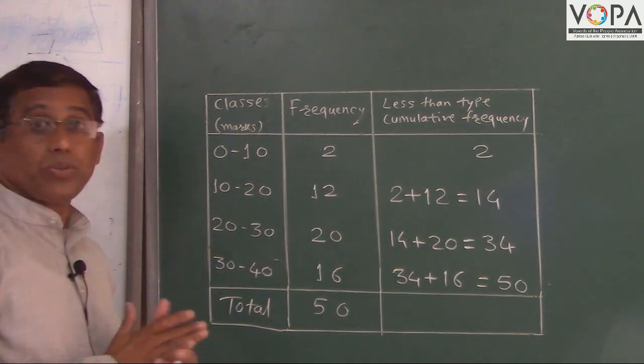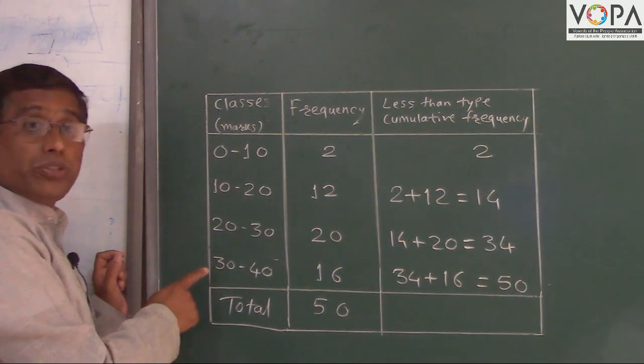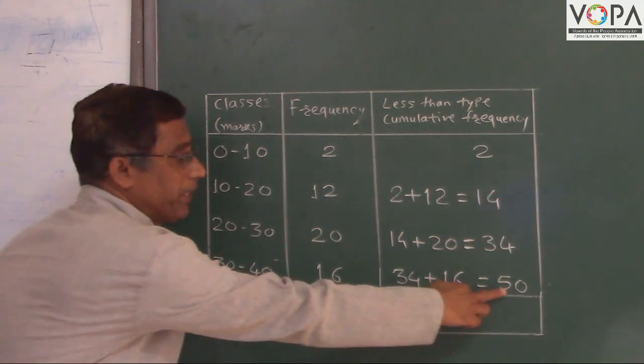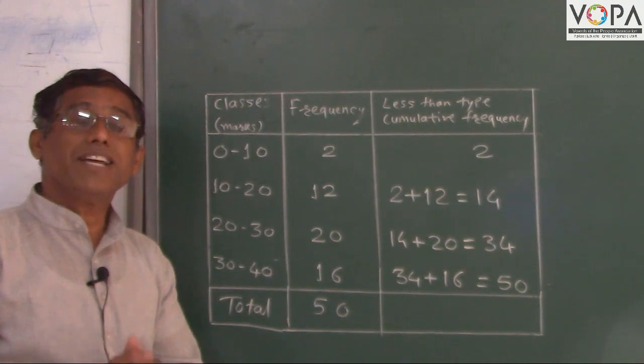Now I ask you last question, how many students got less than 40 marks. So 50 students got less than 40 marks.